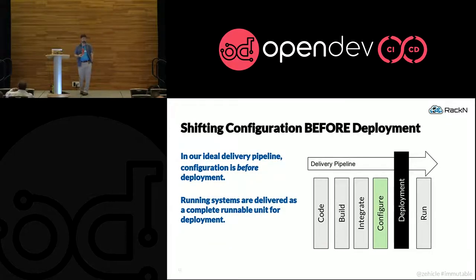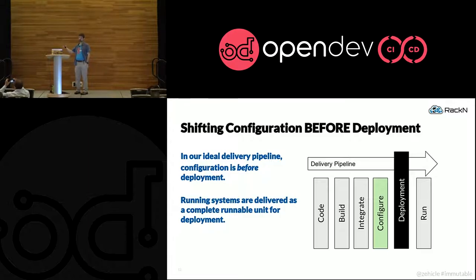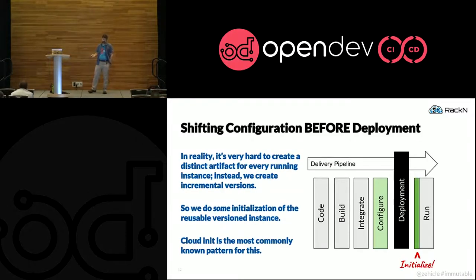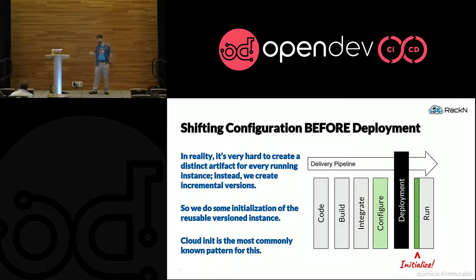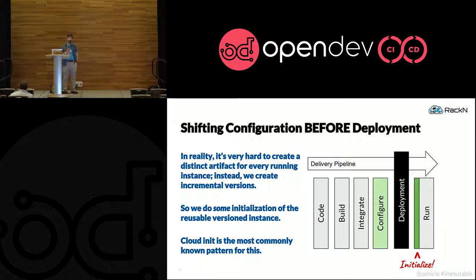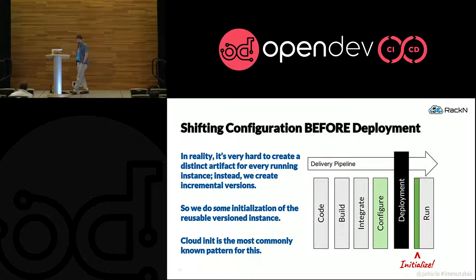What we really want to do is switch that around so that we do the configuration work before we deploy. That would mean configuring every single machine and creating a unique configuration for every machine you want to deploy, which isn't particularly feasible. So in practice, what immutable deployment really looks like is doing as much configuration as we can before deployment and then a little bit of initialization post-deployment. If you're familiar with the cloud init pattern, this is the cloud init pattern. Docker has initialization. If you're doing hardware, we use cloud init also.